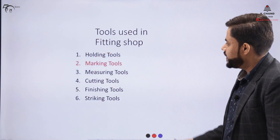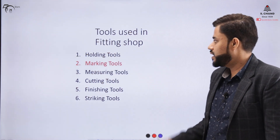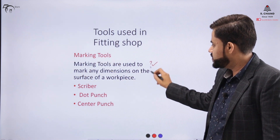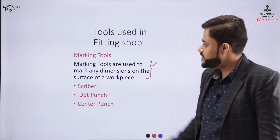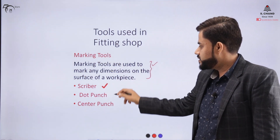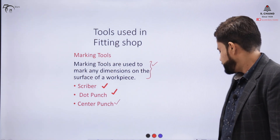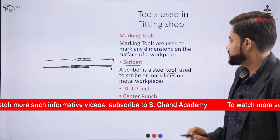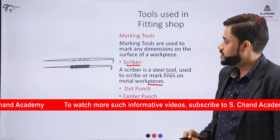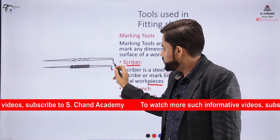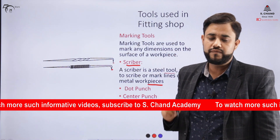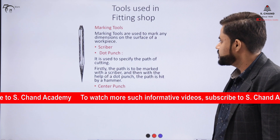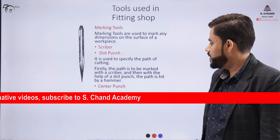Coming to the second category — the marking tools. As the name suggests, marking tools are used to mark dimensions on the surface of the workpiece. The categories include the scriber, dot punch, and center punch. A scriber is a steel tool used to scribe or mark lines on a metal workpiece. It has a pointed end used to mark lines on the surface of metal or sheet metal. The dot punch looks like a pointed tool and is shown in the figure from the S. Chand publishing book.